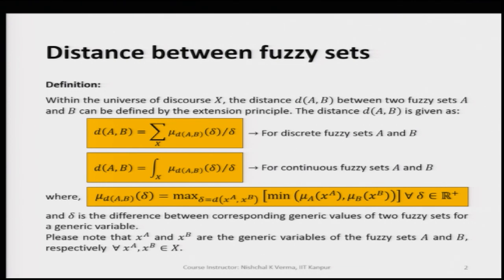The distance, which is represented by D here — D(A, B) — can be defined by the extension principle. Here we have two formulas: one is for discrete fuzzy sets A and B. If we have discrete fuzzy sets, we use this formula to find the distance between two fuzzy sets A and B.